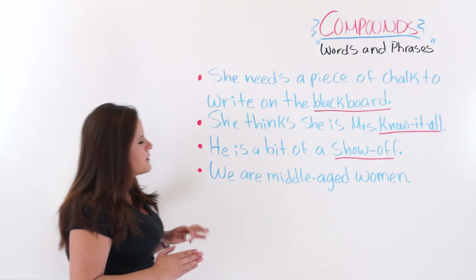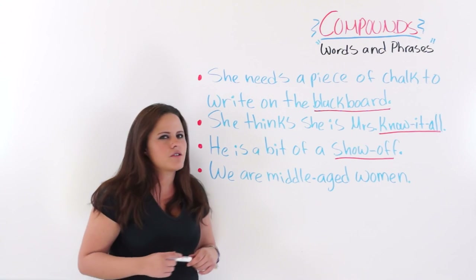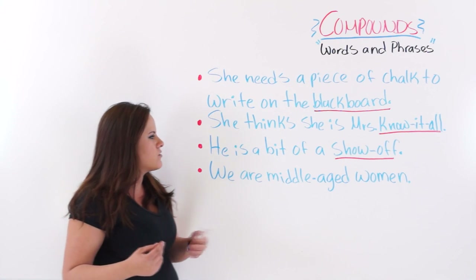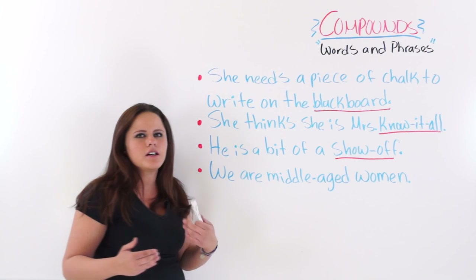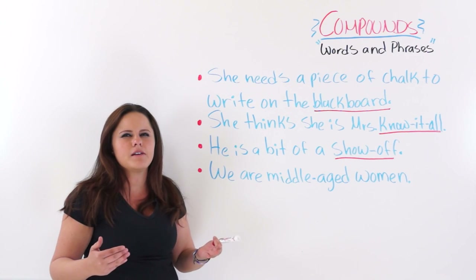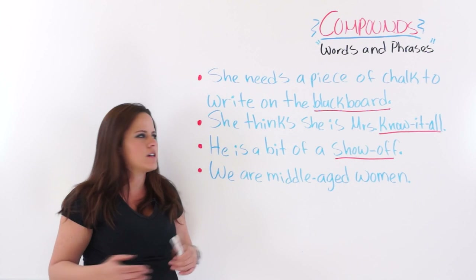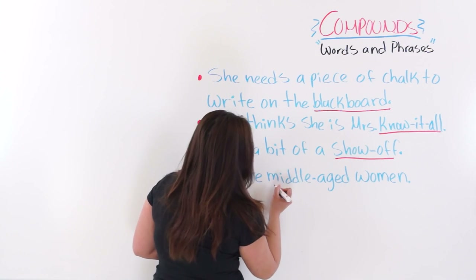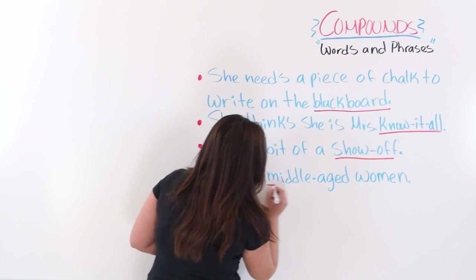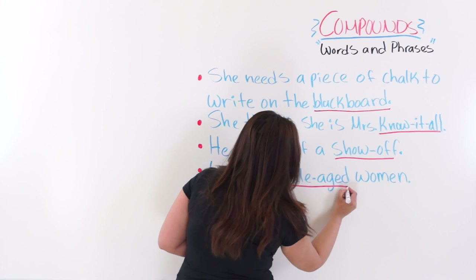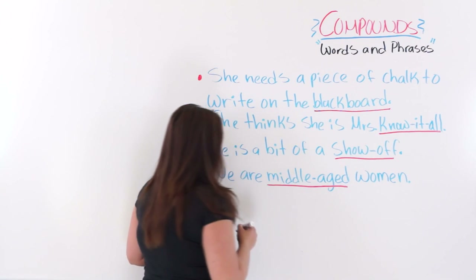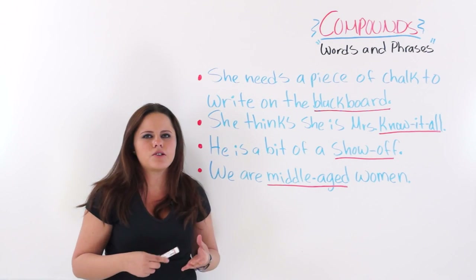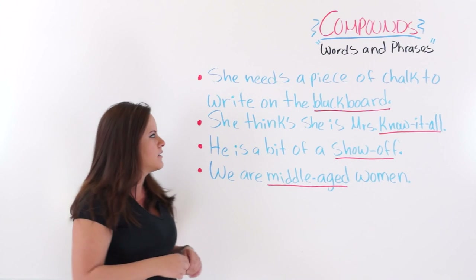The next one says: 'We are middle-aged women.' To be middle-aged is like to be after 30 years old. So middle-aged is another compound word — we are middle-aged women.